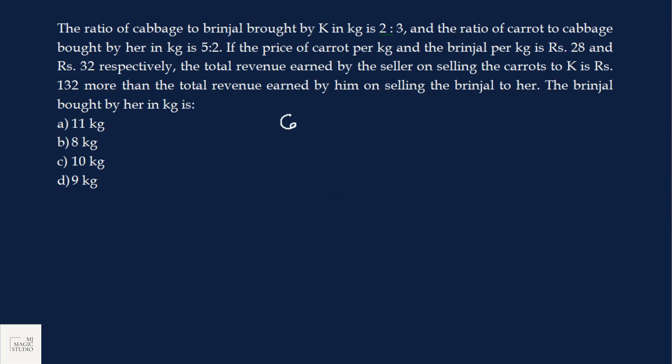The ratio of cabbage to brinjal bought by K in kgs is 2 is to 3. And the ratio of carrot to cabbage bought by her in kgs is 5 is to 2. That means the ratio of carrot, cabbage and brinjal bought by K is 5 is to 2 is to 3. This is the ratio. Price of carrot per kg and brinjal per kg is Rs. 28 and Rs. 32 respectively.